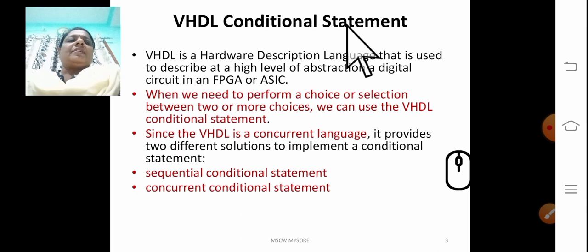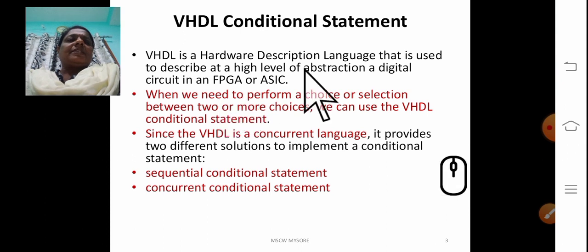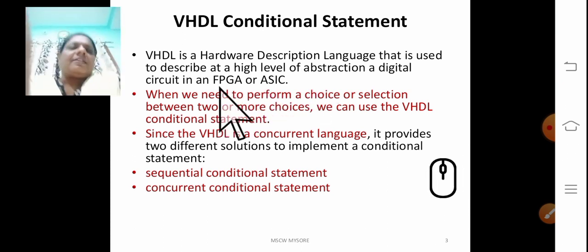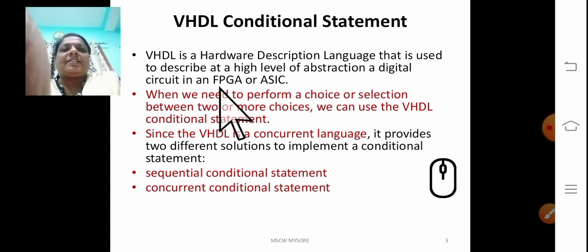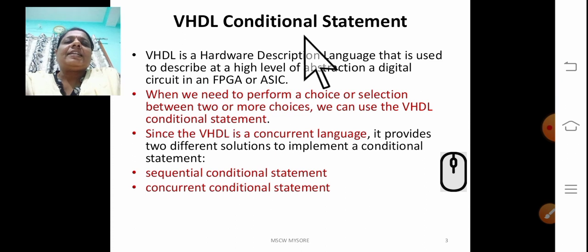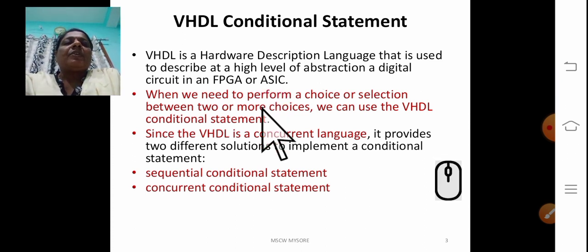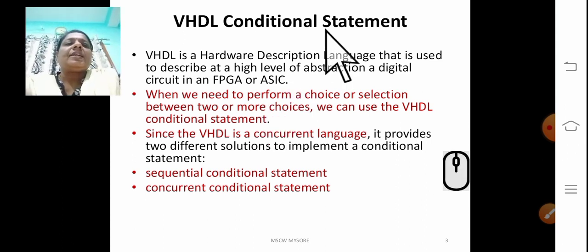First, let us study what are the conditional statements. Till now we have studied the sequential statements available in the VHDL. This if statement is also a sequential statement, but depends on the conditions it is going to execute the set of sequential statements. That is why it is called a sequential conditional statement. In some situations, depends on the conditions, we want to execute some set of equations, then we are going to use the conditional statements.